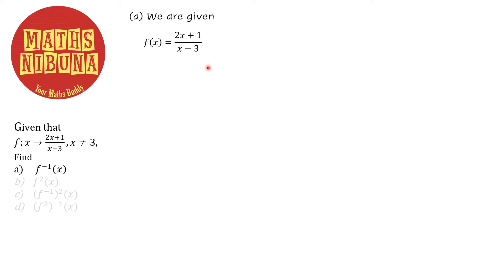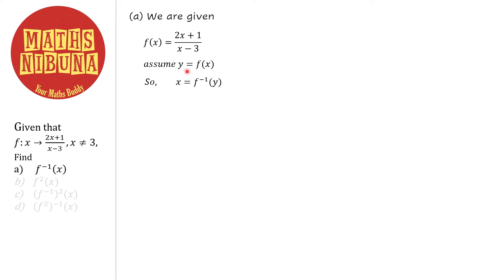In question a, we are given f(x) = (2x+1)/(x-3). When we want to find an inverse function, we assume y = f(x). You can use any letter, but don't use x because x is already here. Normally we assume y. So when y = f(x), we can say that x = f⁻¹(y).